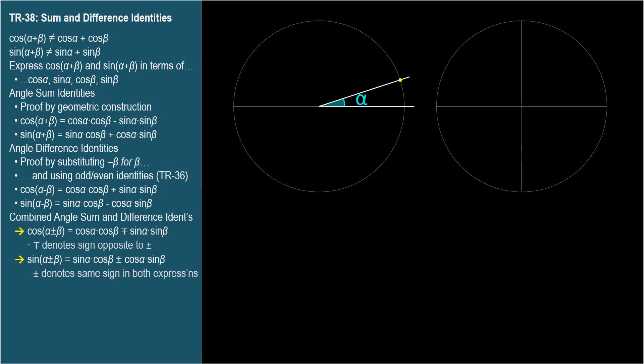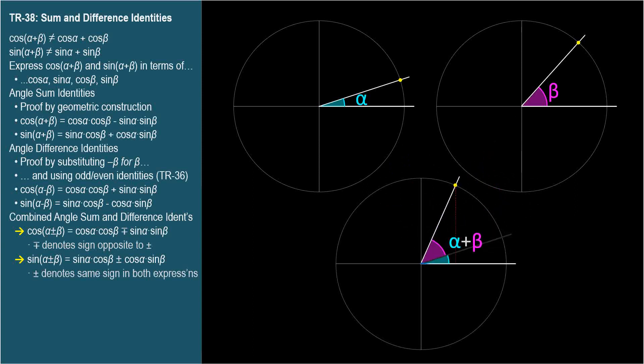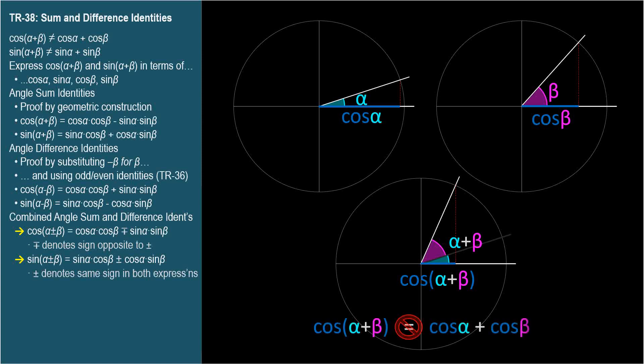We continue this theme now by considering the sine and cosine of the sum of two angles, alpha plus beta. With a little thought, you should realize that we can't find the cosine of alpha plus beta simply by adding cosine alpha plus cosine beta. If alpha and beta are relatively small angles, then the sum of their cosines could easily exceed 1, and cosine of alpha plus beta can't be greater than 1.